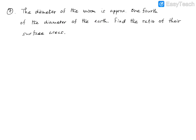Since the radius is half of the diameter, the radius of the moon will also be one-fourth of the radius of the earth. Let us consider the radius of the earth and denote it by r. The radius of the moon is one-fourth of the radius of the earth, because the diameter of the moon is one-fourth of the diameter of the earth.